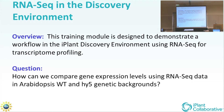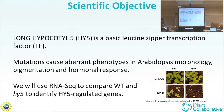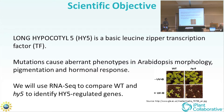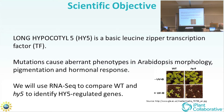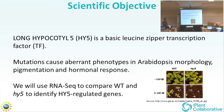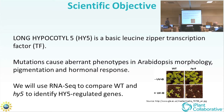The question here is: can we compare gene expression levels using RNA-seq data in Arabidopsis wild type and Hi5 genetic backgrounds? The Hi5, or long hypocotyl 5, is a leucine zipper transcription factor. Mutations cause aberrant phenotypes in morphology, pigmentation, hormonal response, and so on. We're going to use RNA-seq to compare the genetic backgrounds to look for genes that are putatively regulated by Hi5.